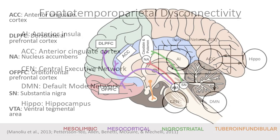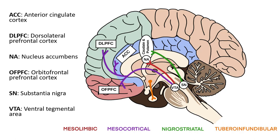Some key implications of disconnectivity in the treatment of psychosis lie in the understanding of distinct dopamine pathways. As we will see in the lecture on the presentation of psychosis, dopamine pathways are implicated in the primary symptom domains: positive, negative, and cognitive. As we will see in the lecture on palliation of psychosis, some of the side effects of antipsychotic medications are related to altered dopaminergic activity in these pathways as well.